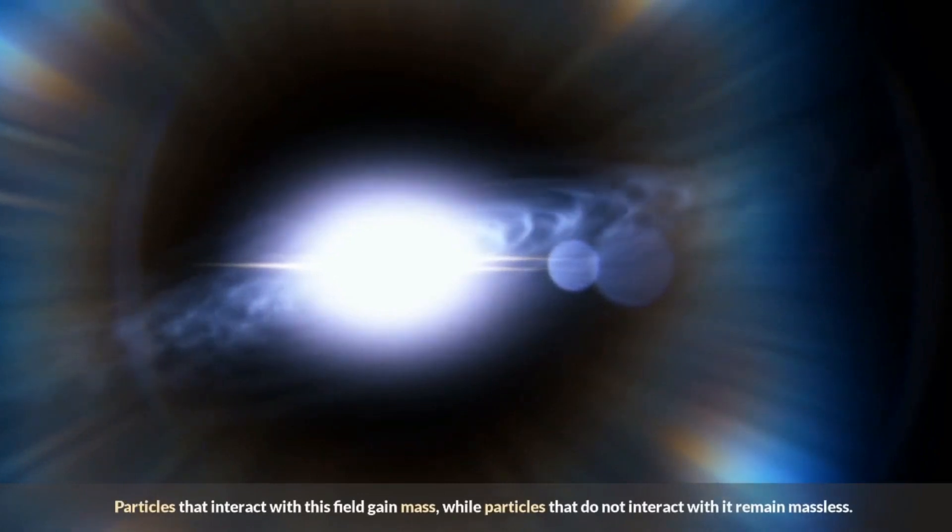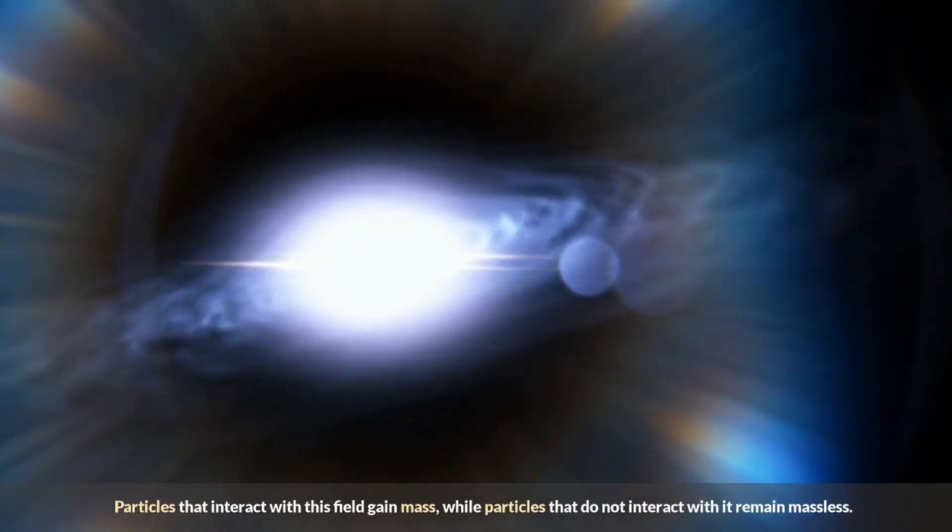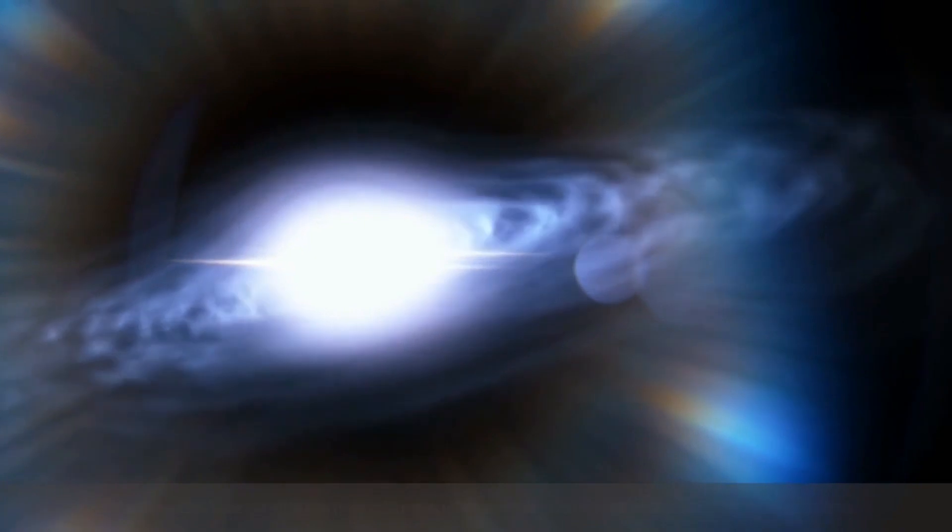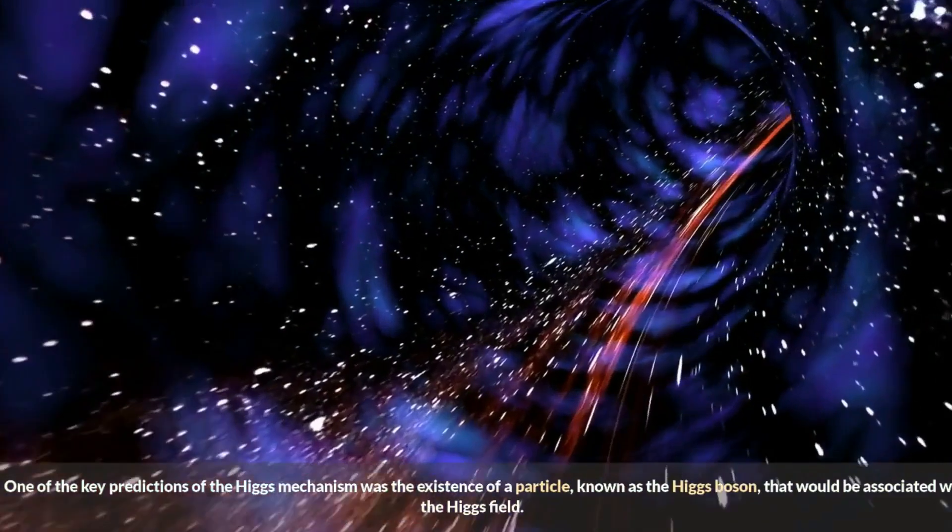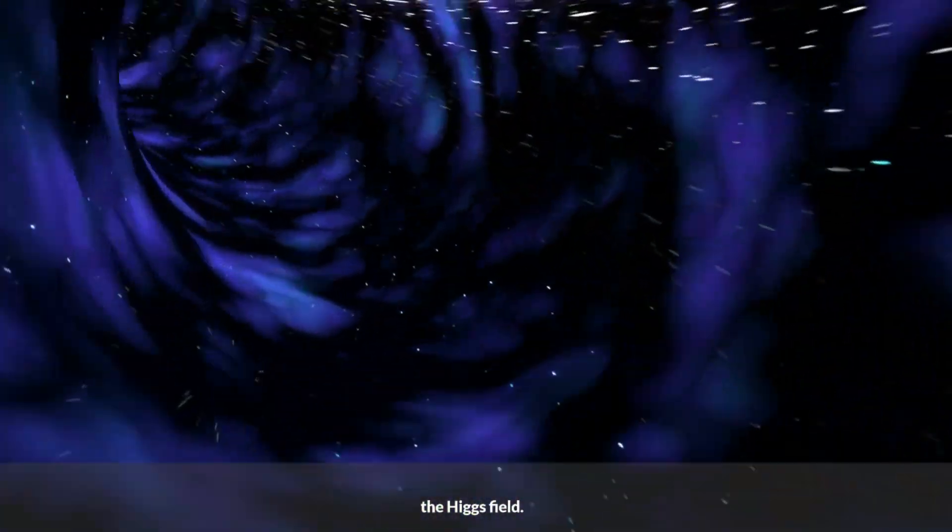Particles that interact with this field gain mass, while particles that do not interact with it remain massless. One of the key predictions of the Higgs mechanism was the existence of a particle, known as the Higgs boson, that would be associated with the Higgs field.